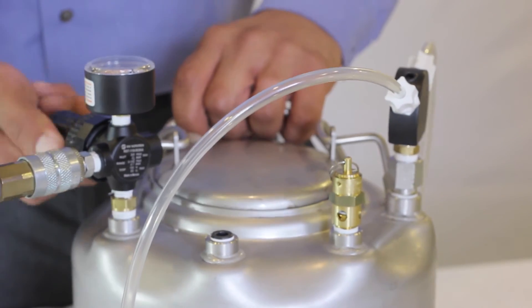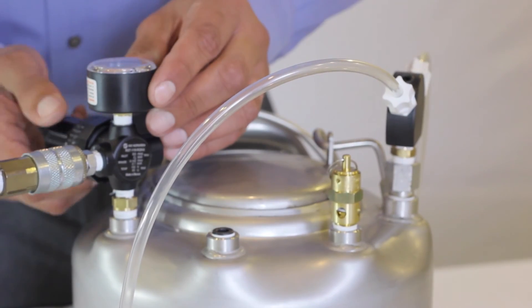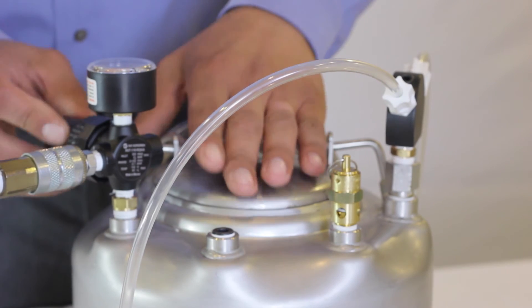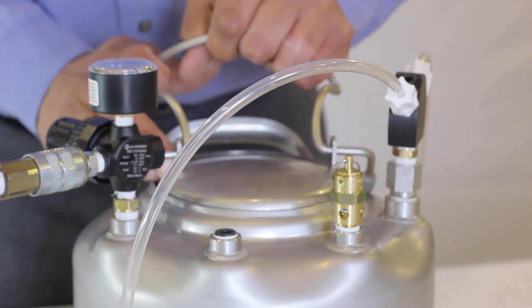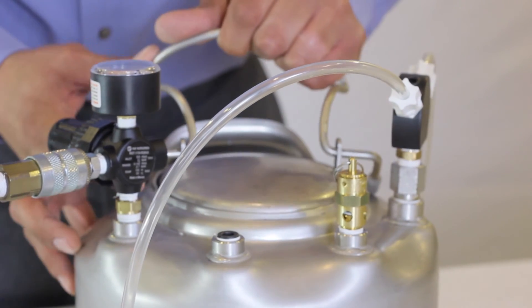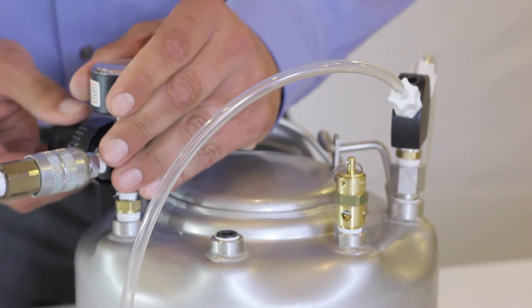Make sure your gauge reads 0 PSI before going any further. If you hear air leaks, check the lid to make sure it is properly secured and your fittings are tightened. Set your regulator to 5 PSI to start.